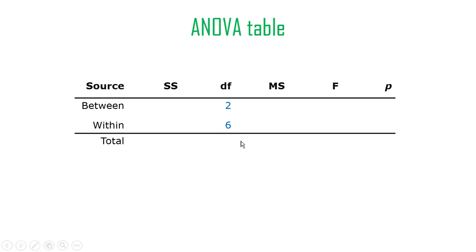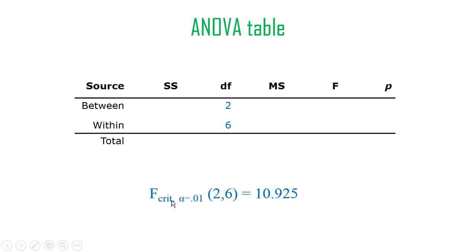It's most useful to fill in degrees of freedom first, because then you can look up your F critical value. You actually need a really huge F value to reject the null hypothesis here because it's a tiny study — very tiny studies require extremely compelling evidence. You shouldn't really be doing something with cells of three, but for example purposes it works. The F critical for alpha of 0.01 with two and six degrees of freedom — two in the numerator, six in the denominator — is 10.925. So we need an F observed greater than 10.925 to reject the null hypothesis.